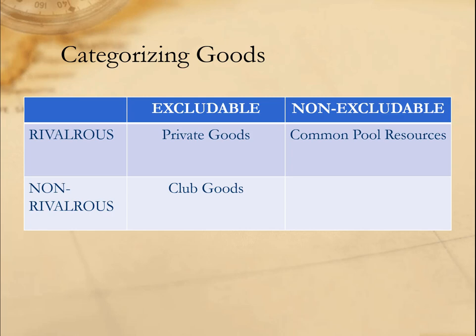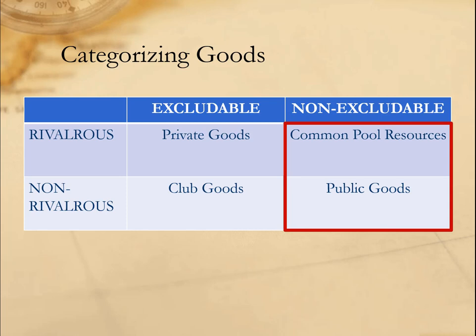And finally, we have public goods, which are both non-rivalrous and non-excludable. That is, one person's use of the good does not diminish another person's use, and it's difficult to prevent people who haven't paid from benefiting from it. Examples might include national defense or broadcast television. Historically, such goods have been provided by the state, as the market is unable or unwilling to provide public goods in sufficient quantities to meet public demand. It's these final two categories — common pool goods and public goods — that we'll spend the most time with in this class.